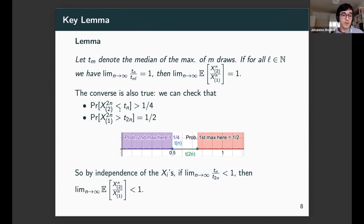The converse is also true. If you take the second largest out of 2n bids being strictly less than t_n, this occurs with probability at least 1/4. The largest being greater than t_{2n} will be equal to 1/2. In the converse, we're interested in both events occurring at the same time. You would look at the second max being in the purple region and the first max in the red region, separated by this gap t_n, t_{2n}. By independence, we can lower bound the probability of both these events occurring by a constant. If we can show that the limit of t_n over t_{2n}, the size of this gap, is strictly less than 1 as the limit goes to infinity, then we also have that bid shading occurs.